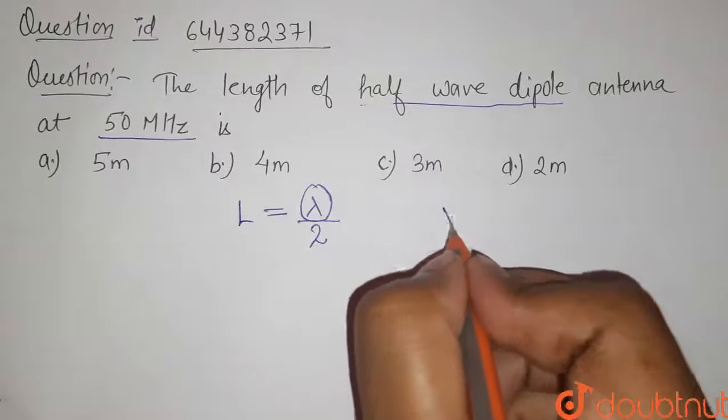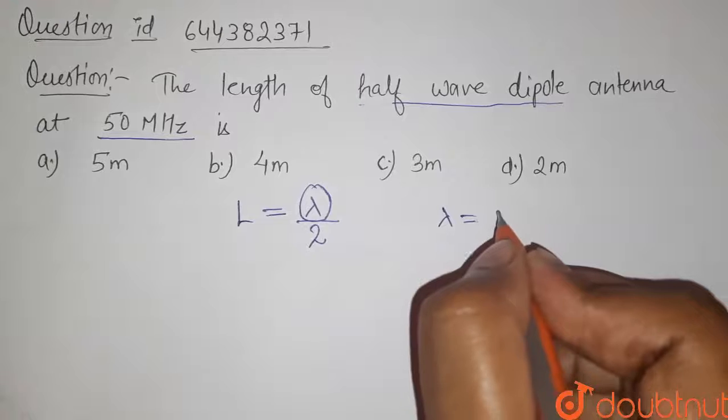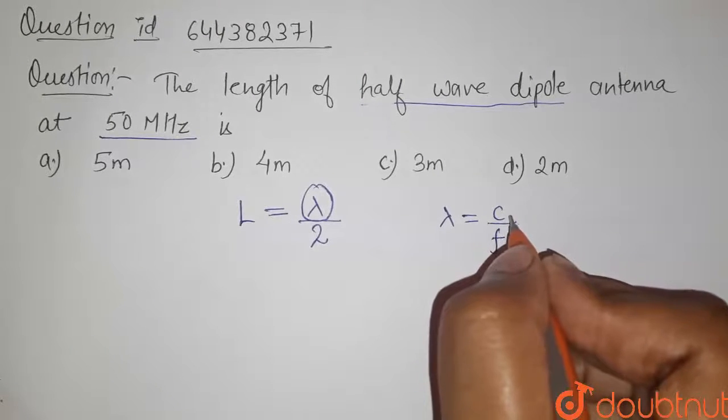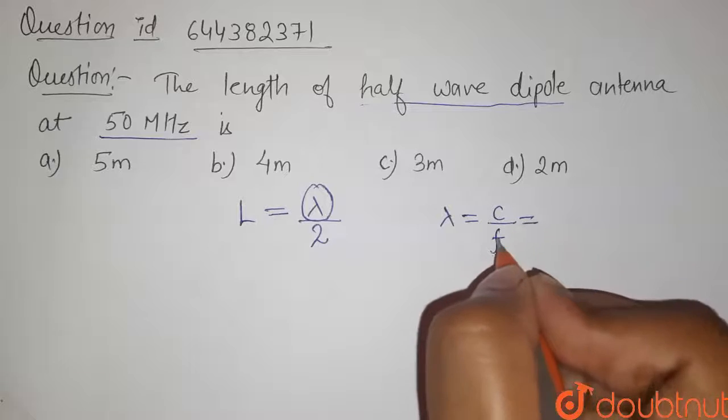So the lambda, that is wavelength, is given by C upon frequency. Here C is the speed of wave and f is the frequency.